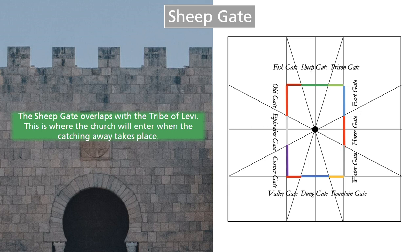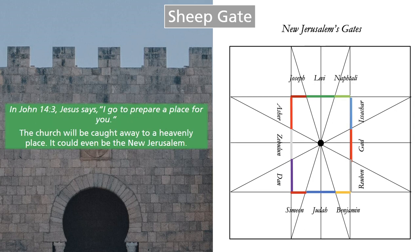The Sheep Gate overlaps with the tribe of Levi. This is where the church will enter when the catching away takes place. In John 14:3, Jesus says, 'I go to prepare a place for you.' The church will be caught away to a heavenly place — it could even be the New Jerusalem.